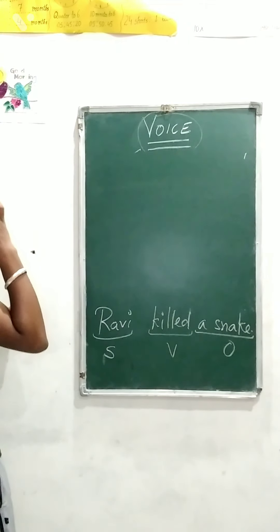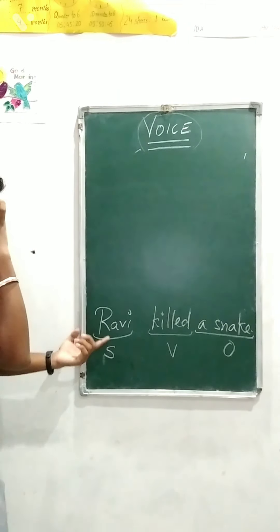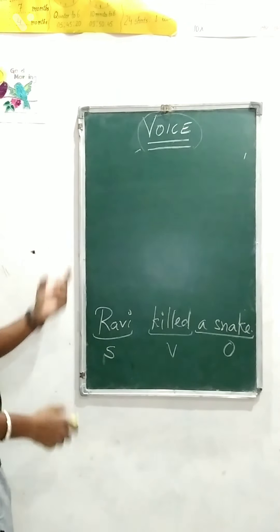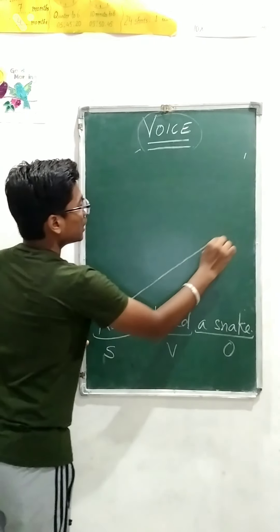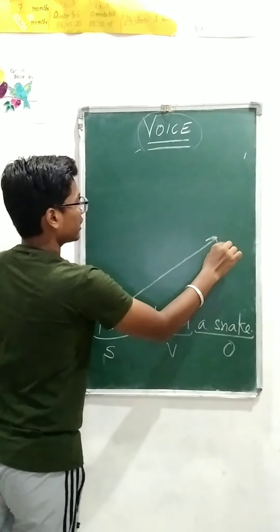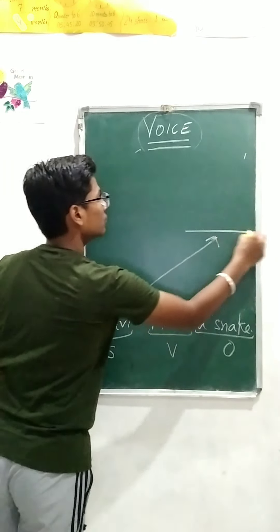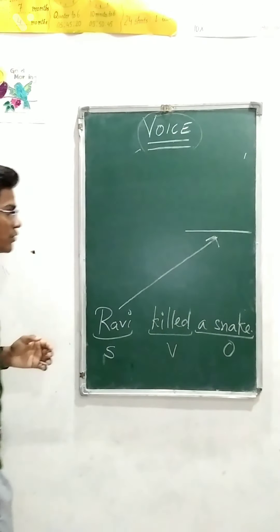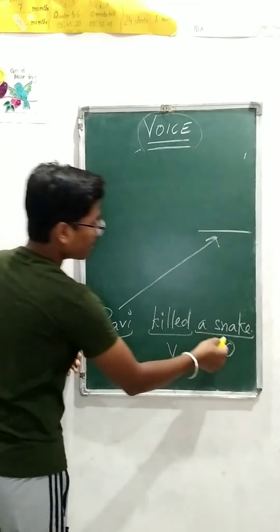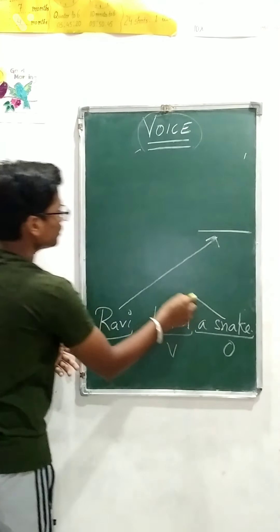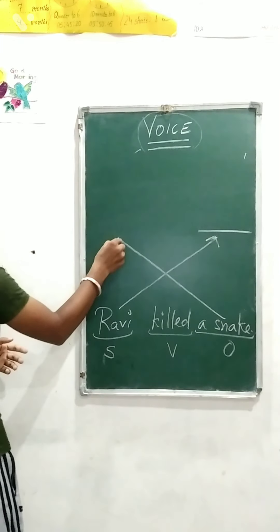When we have to change active to passive, the subject becomes the object, and the object becomes the subject.